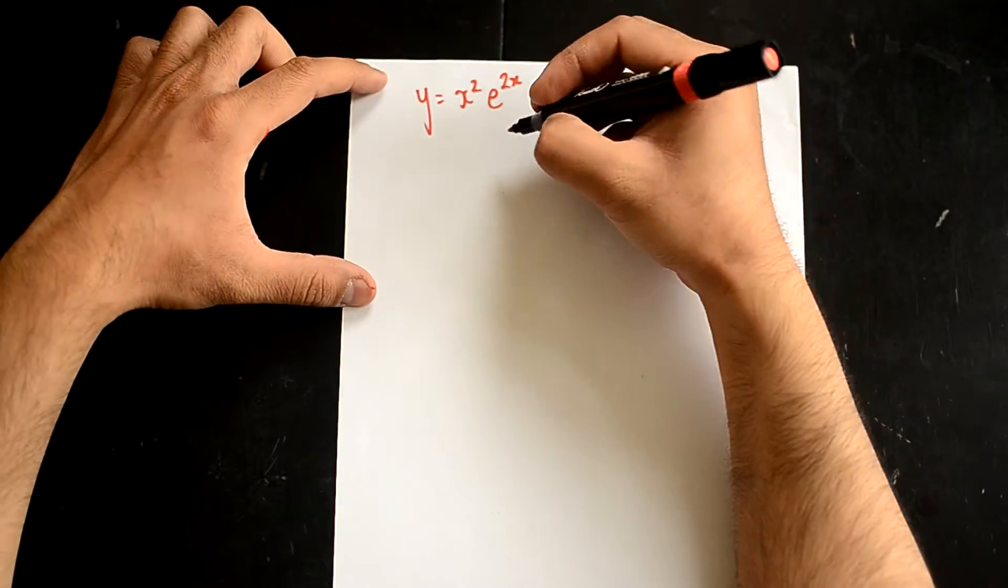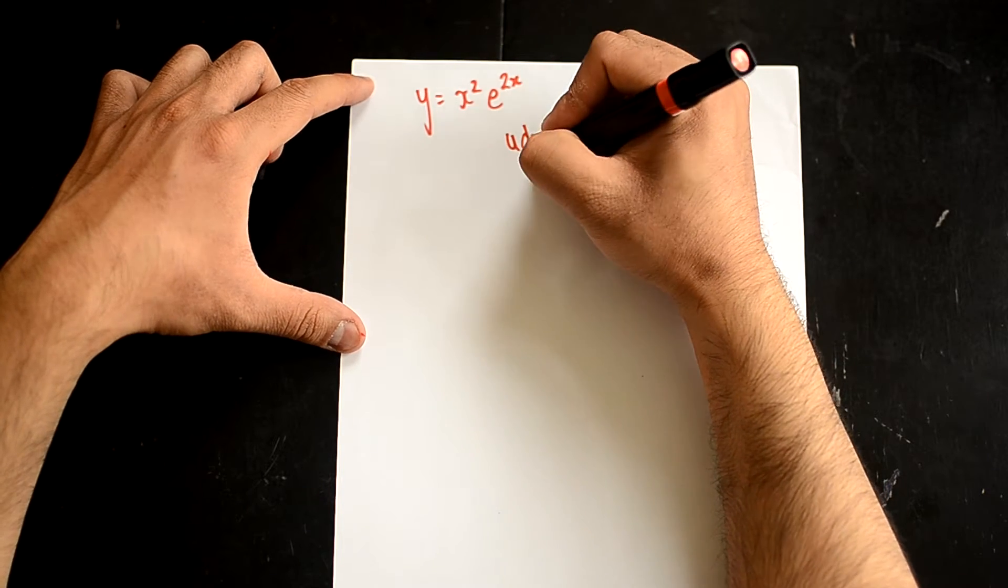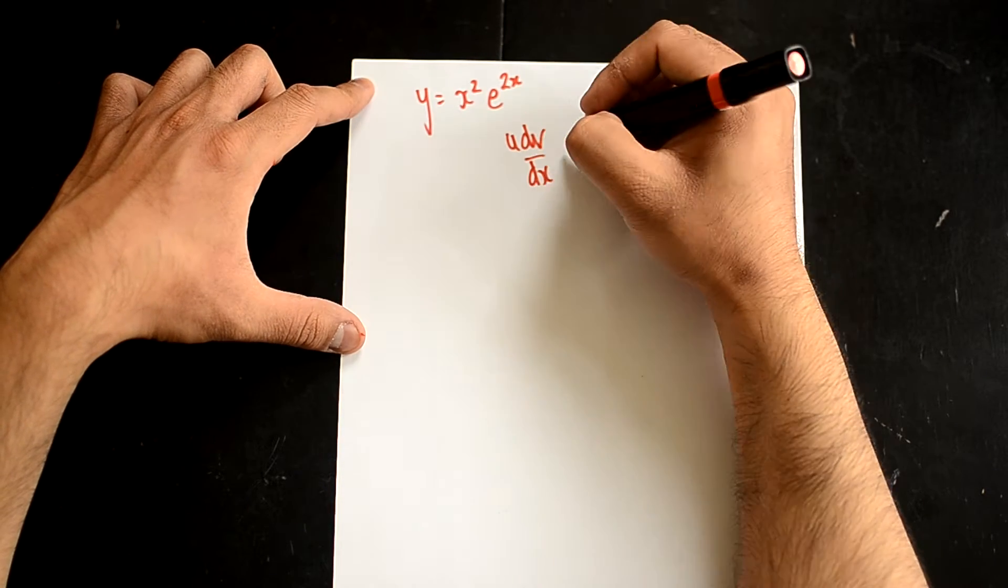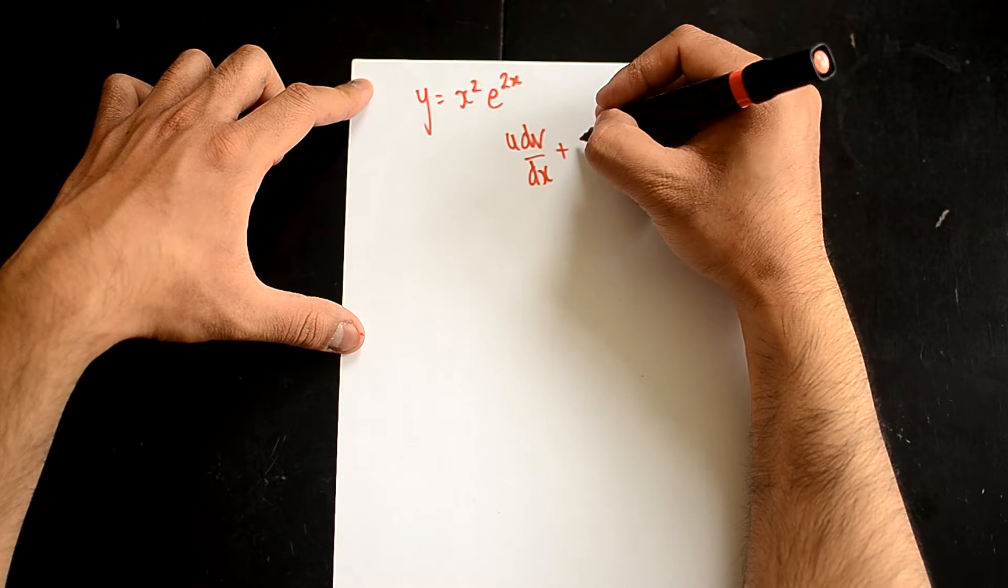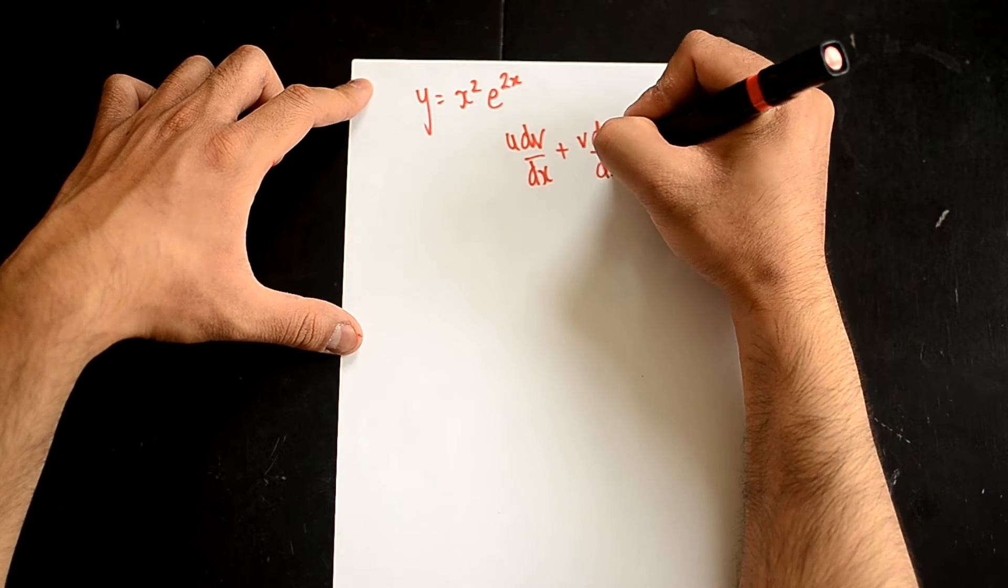So, as always with the product rule, we write out the product rule equation, which is u dv/dx plus v du/dx.